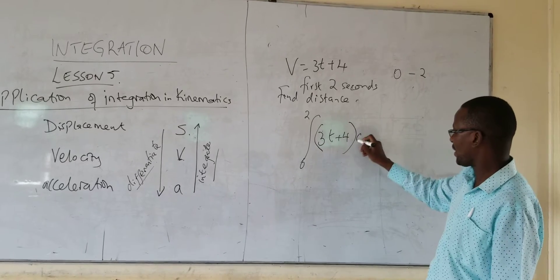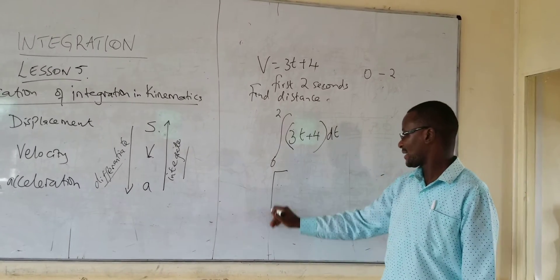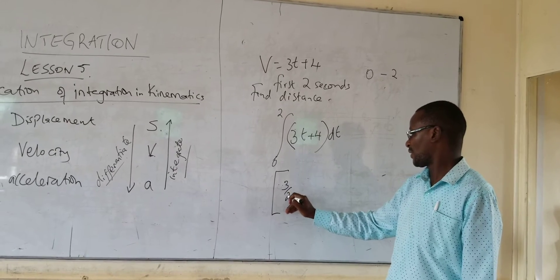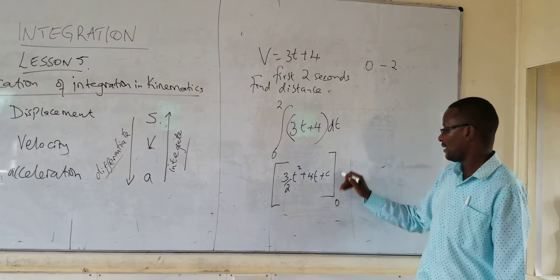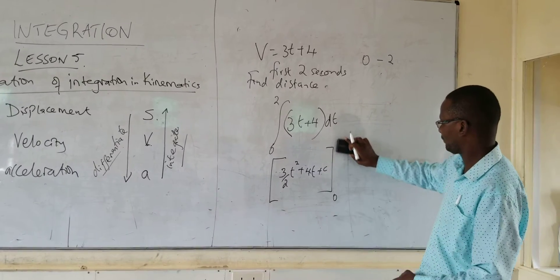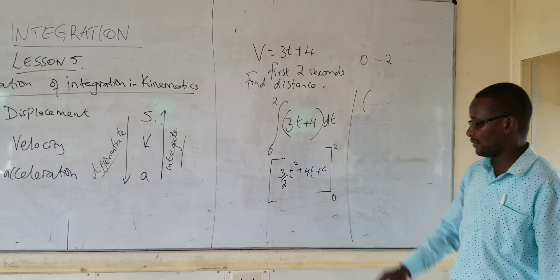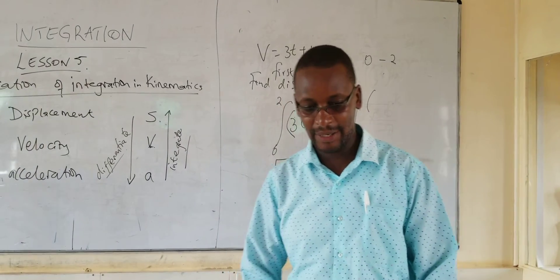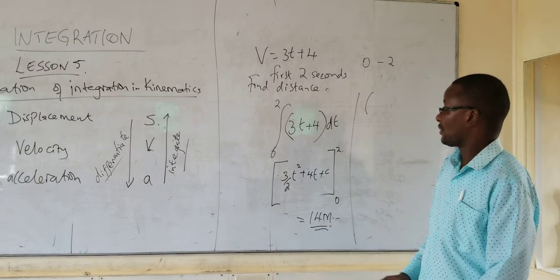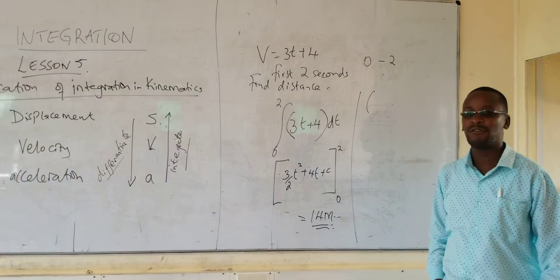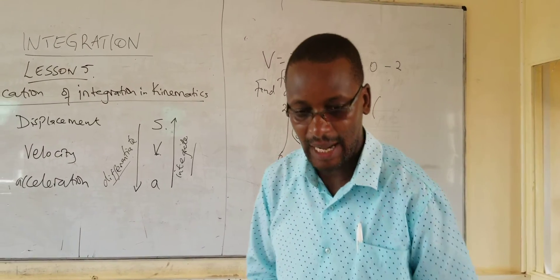Our unknown is time, so we integrate with respect to t. Integrating gives 3 over 2 t-squared plus 4t, and you can add a constant, though it's not a must in this case, from zero up to two. You substitute t equals two and t equals zero and get the answer. Your answer will be 14 meters — the distance moved by the particle for the first two seconds.